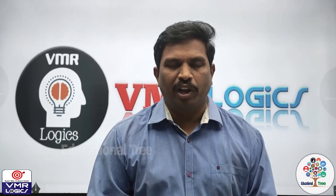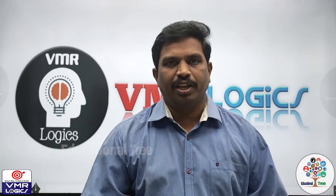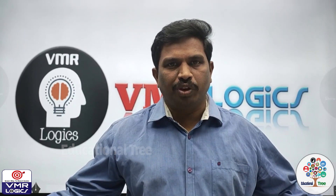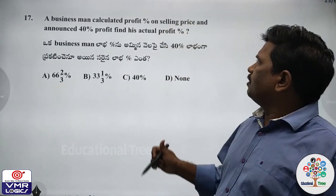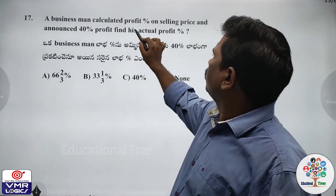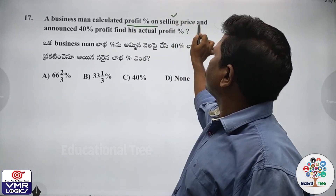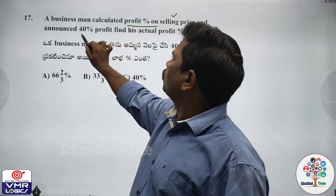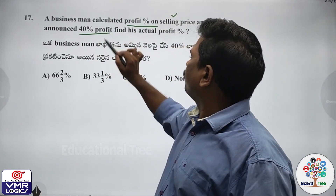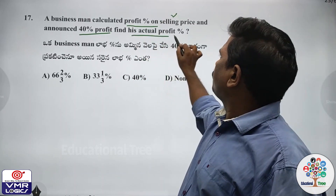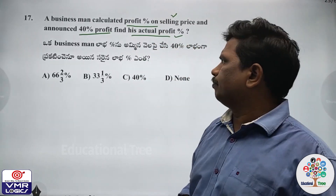Hi dear students, welcome to VMI Logics. A businessman calculates the profit percentage on selling price and announces 40% profit. Find his actual profit percent.